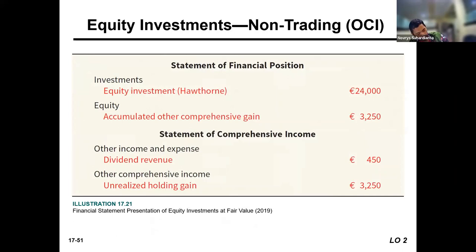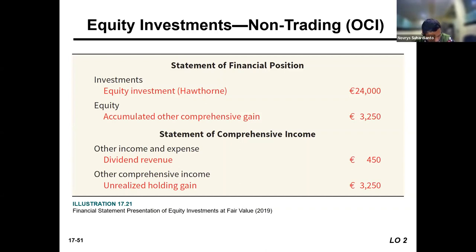After doing that adjustment, on the statement of financial position we see equity investment after adjustment. On the equity section, we see accumulated other comprehensive income with the previous unrealized gain. On the income statement, we recognize dividend revenue, and in the second part — other comprehensive income — we have the unrealized gain.